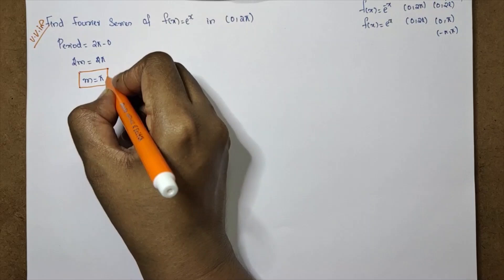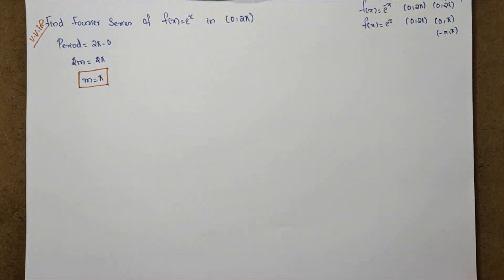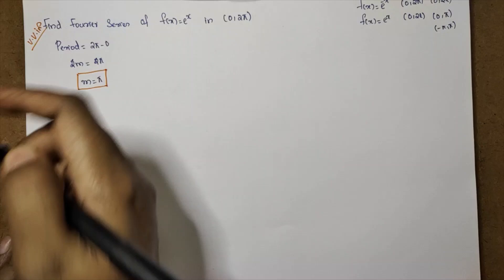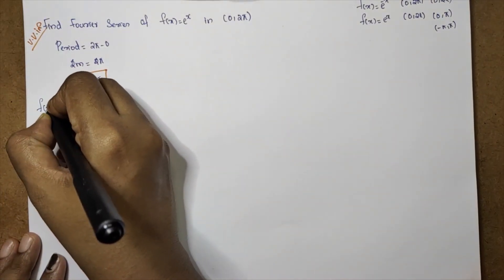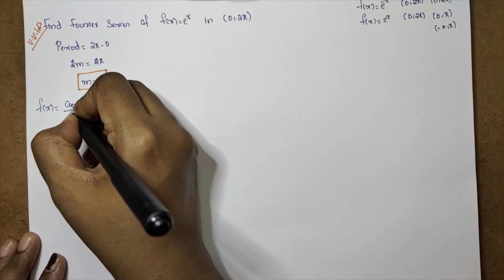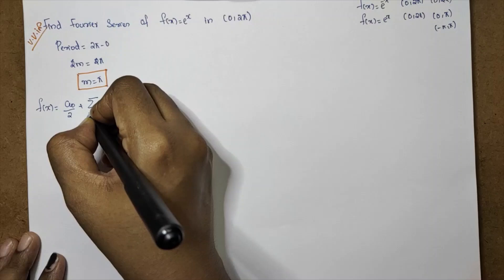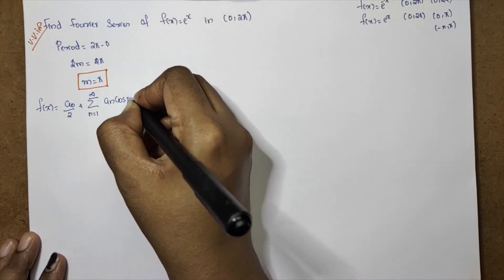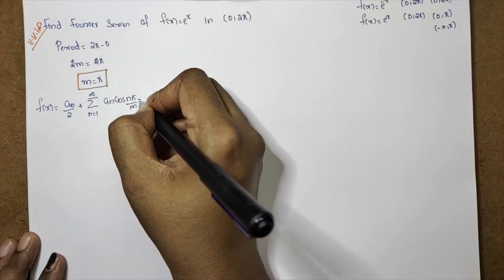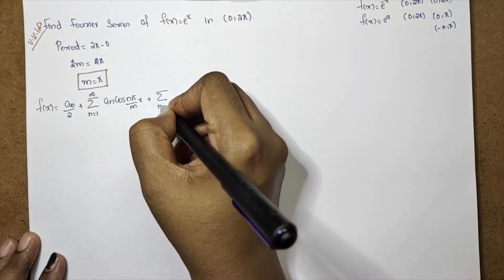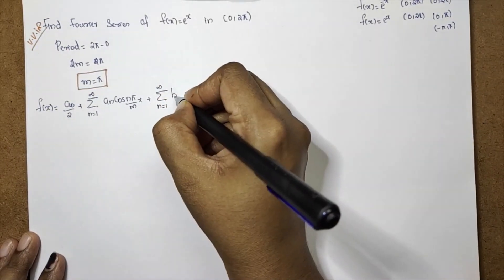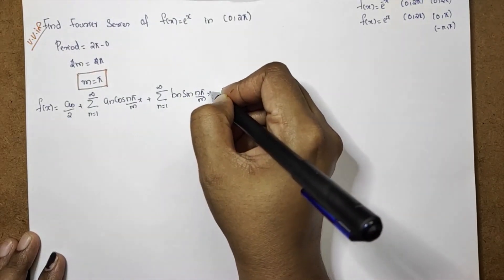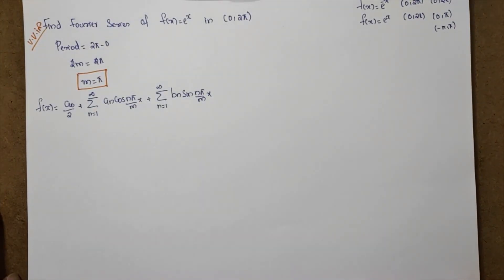We have the general Fourier formula: f(x) is equal to a₀ by 2 plus summation n equal to 1 to infinity aₙ into cos(nπx/L) plus summation n equal to 1 to infinity bₙ into sin(nπx/L).